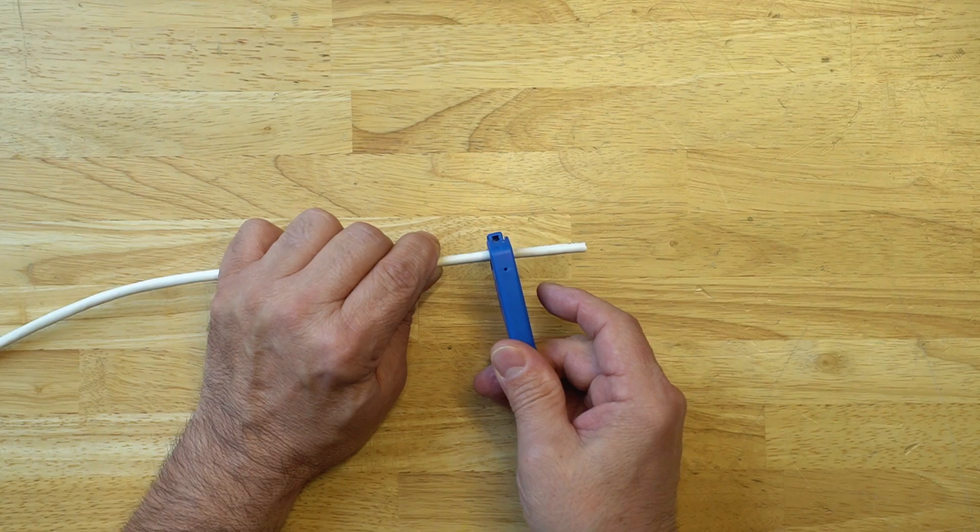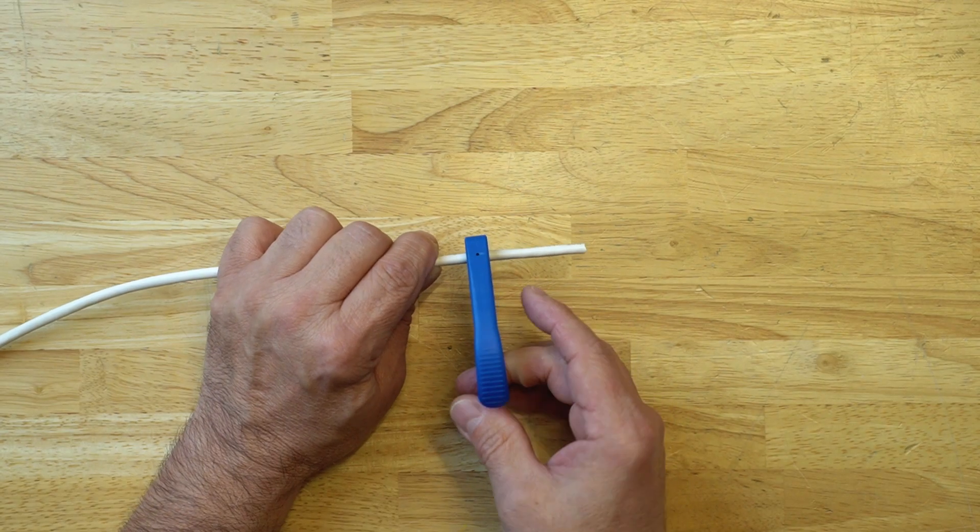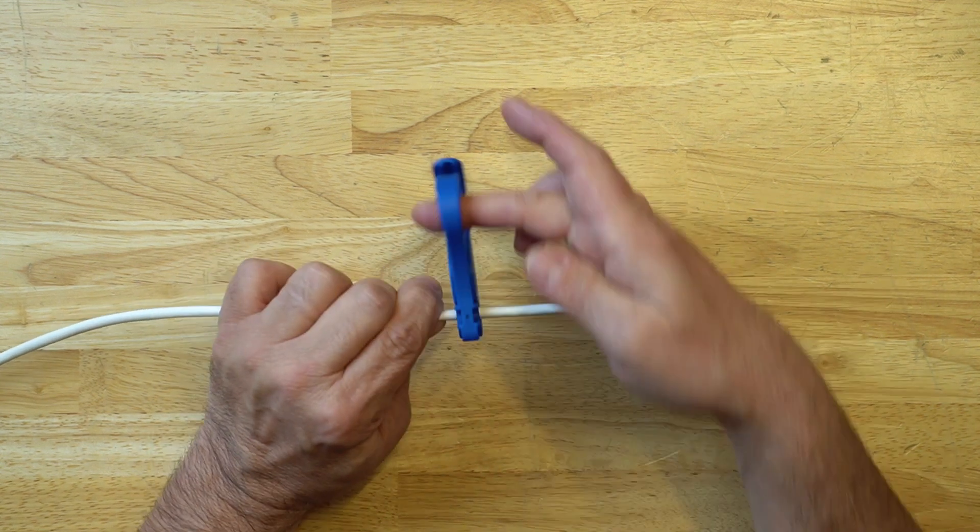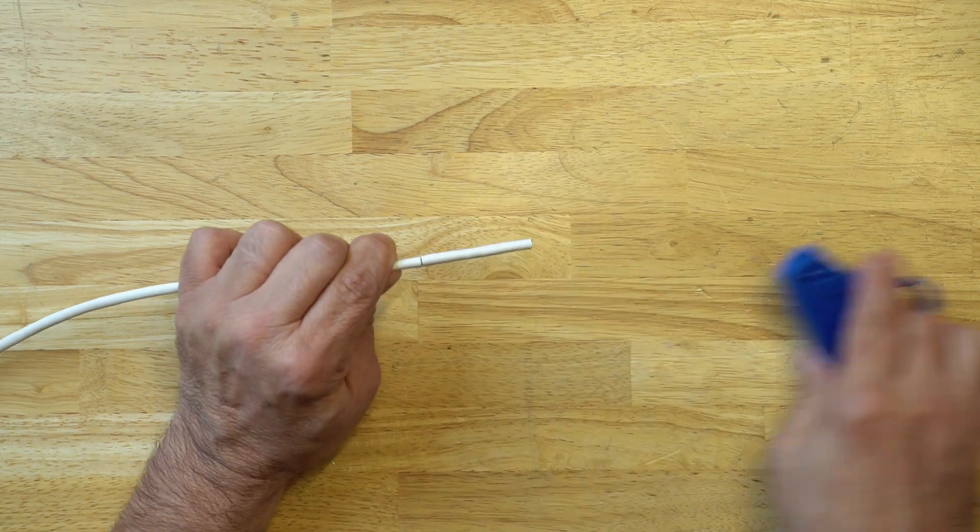The tool is simple to use. Simply open up the jaws, place it on the cable, and ring three or four times until you feel the blade cut through the jacket.